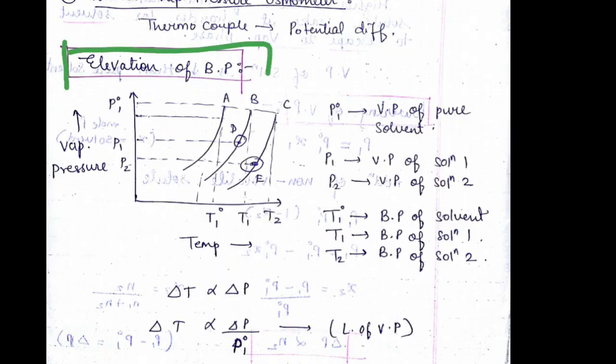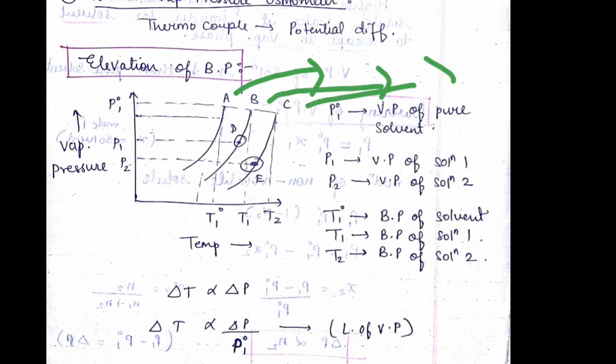We are going to see what is elevation of boiling point. The graph is plotted: vapor pressure versus temperature. We have three different solutions: one is pure solvent, other is solution 1, and C is solution 2. This shows vapor pressure of pure solvent, vapor pressure of solution 1, and vapor pressure of solution 2.